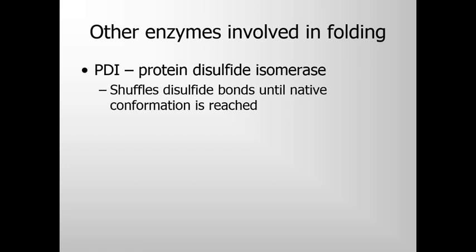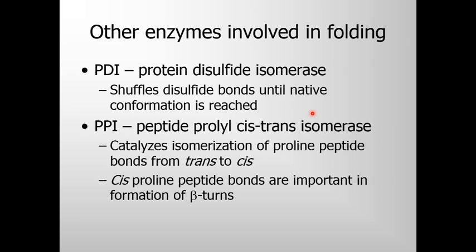Finally, the folding pathways of some proteins require two enzymes that catalyze isomerization reactions. The first one is PDI, or protein disulfide isomerase, a widely distributed enzyme that catalyzes the interchange or shuffling of disulfide bonds until the bonds of the native conformation are formed. The second one is peptide prolyl cis-trans isomerase, or PPI, which catalyzes isomerization of proline peptide bonds from trans to cis. Cis-prolines are found in beta turns, and PPI is the enzyme that assists this trans-to-cis conversion.